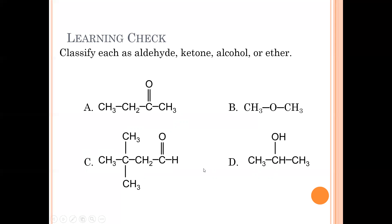C has a carbonyl carbon at the end — this is an aldehyde. The longest chain is four carbons: this is 3,3-dimethylbutanal. D has an OH group in the middle — this is an alcohol. Naming off the longest chain and adding OL: this is 2-propanol.